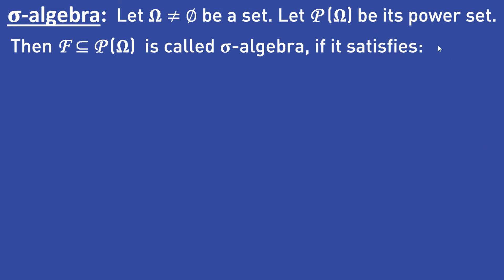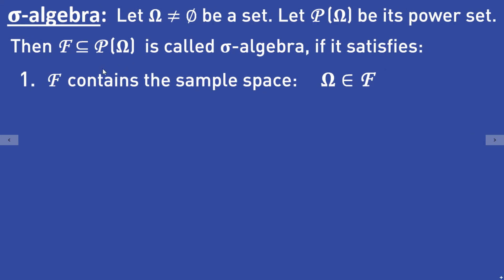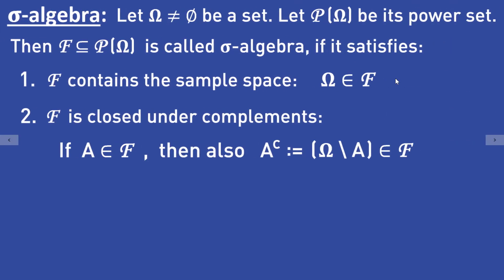Property 1: F contains the sample space. That means omega is an element of F. Property 2: F is closed under complements. That means if A is an element of F, then the complement of A is also an element of F.